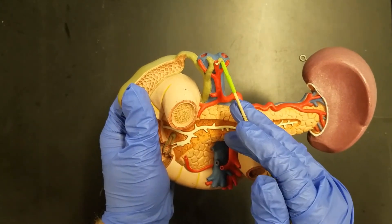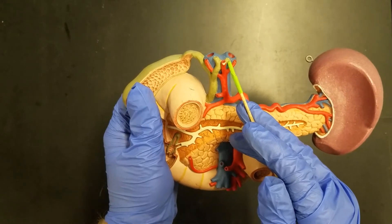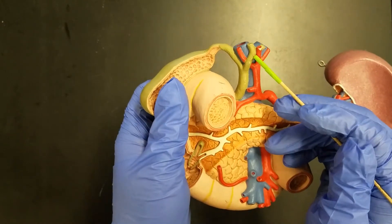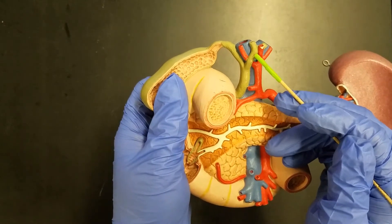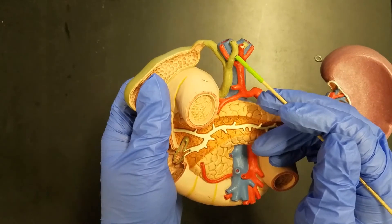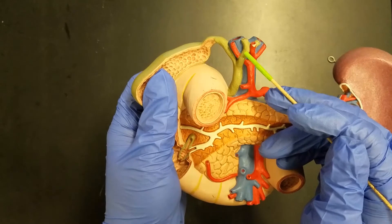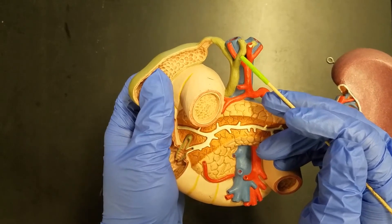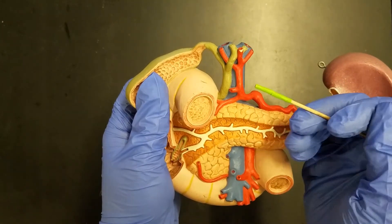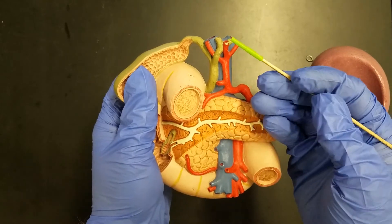Now as the left and right hepatic ducts leave the liver, they merge together to form a united passageway. This common passageway out of the liver is referred to as the common hepatic duct. Common because it's a common passageway, and hepatic because it's leaving the liver.